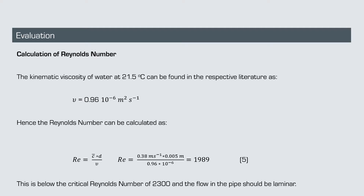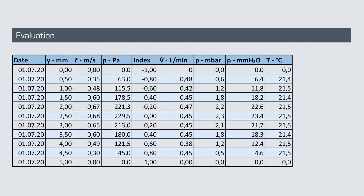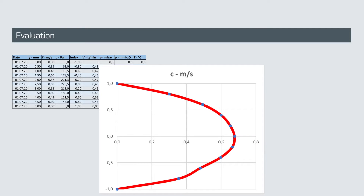The value for the kinematic viscosity of water at 21.5 degrees Celsius can be found in the literature as 0.96 × 10⁻⁶ square meters per second. With that, our Reynolds number becomes 1,989. This is under the critical Reynolds number of 2,300, and therefore the flow profile in our pipe should be laminar. We then plot our values for the measured velocities over the indexed radius and indeed obtain a nice laminar flow profile.